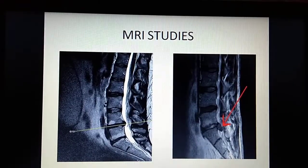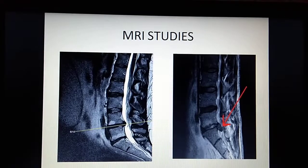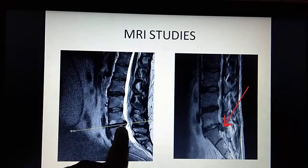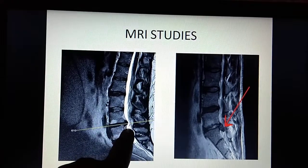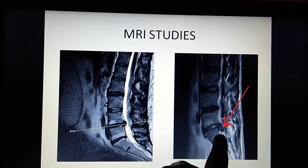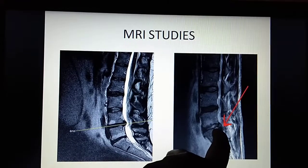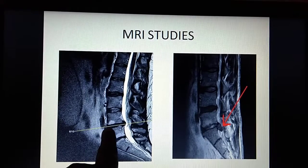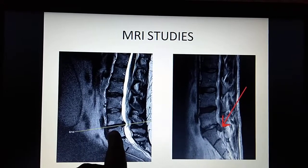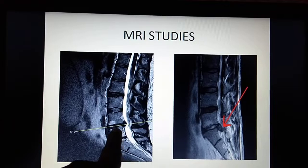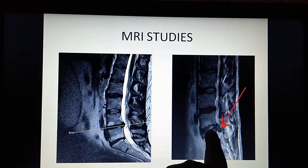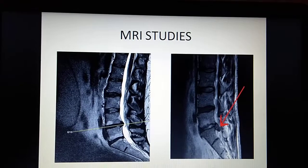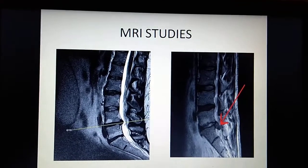Looking at the MRI of any kind of IVDP, you can see the disc — I've marked it here — coming out posteriorly towards the spine. Here you can also see the disc bulge. The blackish part and the whitish part indicate the healthiness of the disc. Here you can see that the healthiness is a little bit less.